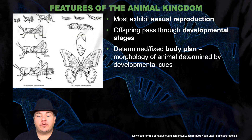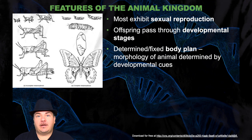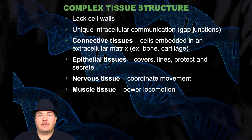Most feature sexual reproduction, and the offspring pass through developmental stages. They also have a determined or fixed body plan, so the morphology of the animal is determined by developmental cues. They lack cell walls, and they have unique intercellular communication through gap junctions. They have connective tissues — cells embedded in an extracellular matrix — for example, bone or cartilage.